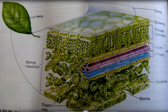And you see here that you have a vein — a vein made of xylem and phloem — two special tissues in plants. Xylem is responsible for the transport of water and nutrients, and phloem is responsible for the transport of nutrients.